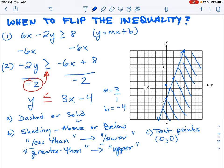If I plug in here zero zero, it's going to be zero is less than or equal to three times zero plus negative four. That's going to leave us with negative 4. So the question is, is this true or false? Zero is less than negative 4.